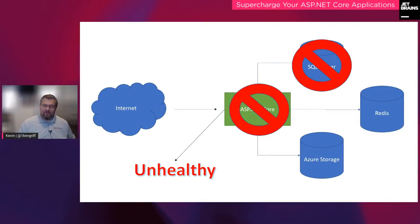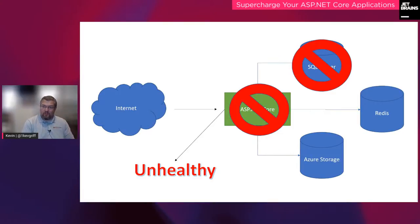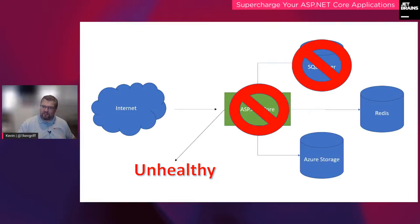If the database goes down or any other required service, your site is down and it can't recover until everything recovers. We also have a term for this — unhealthy. It means things are not running in a healthy manner. So we have two terms: healthy and unhealthy. There's a mechanism already built into ASP.NET Core that will tell you — or allow you to set up regular checks that look at all your different dependencies and tell you whether or not they're healthy or unhealthy. There's also another state called degraded, where things are slowing down but not completely failed.